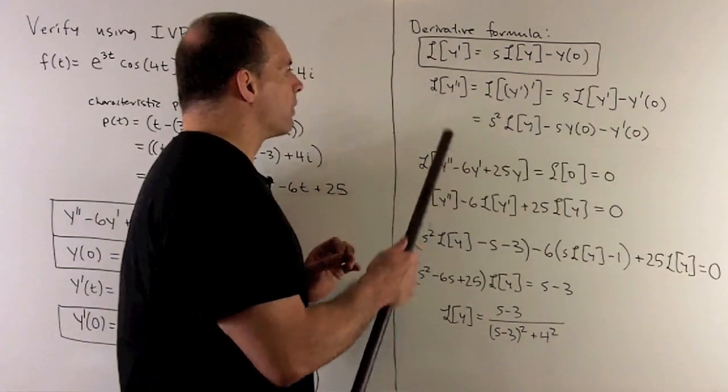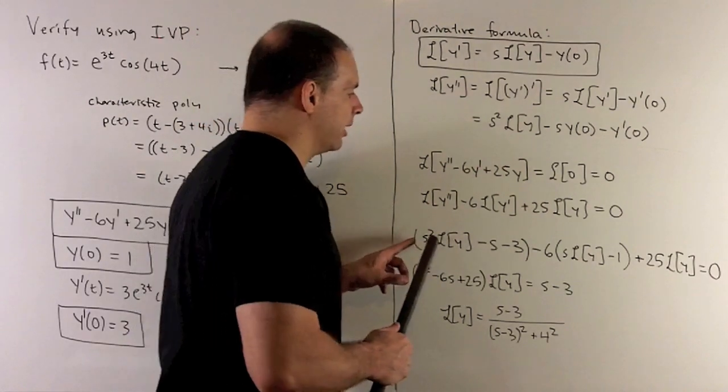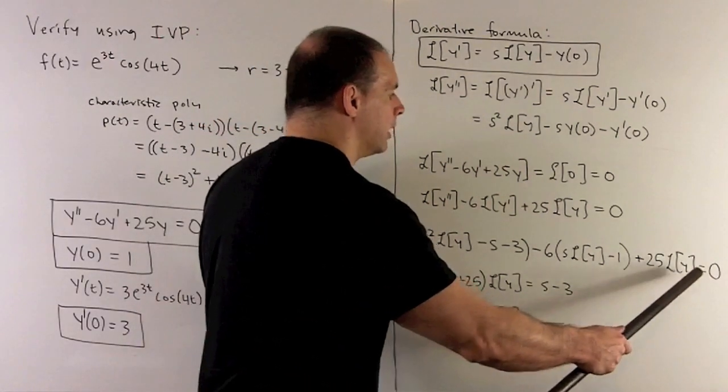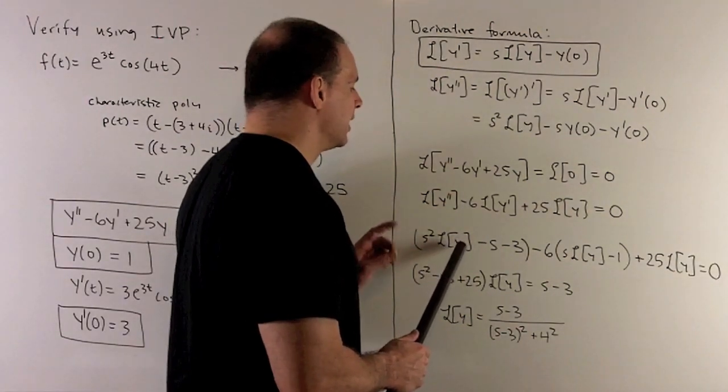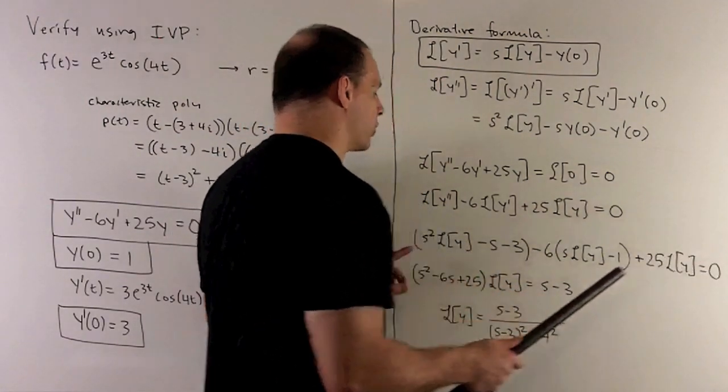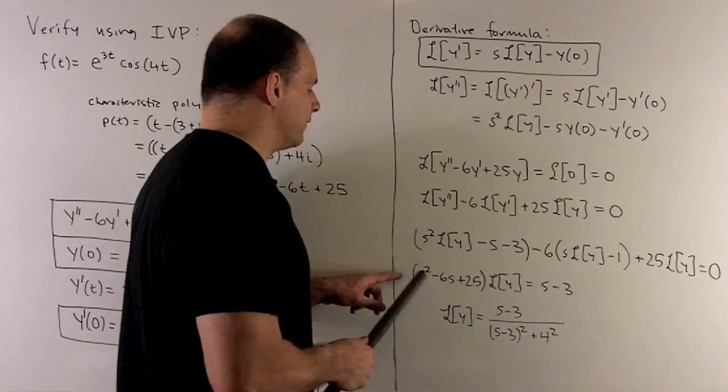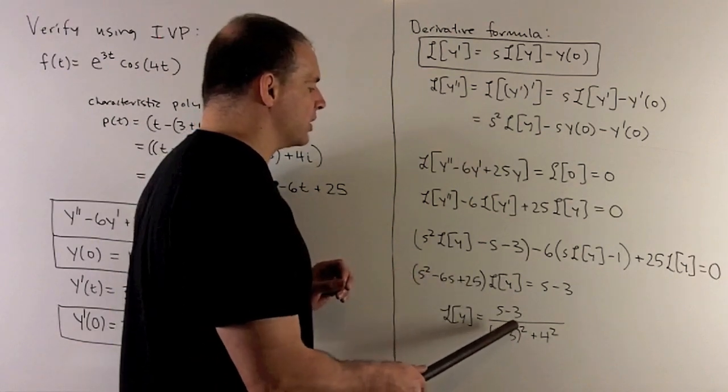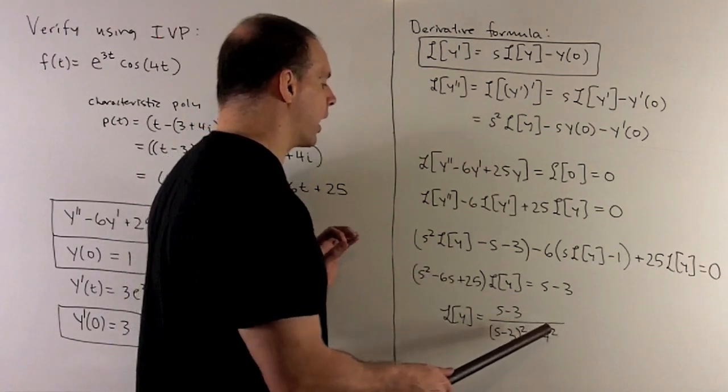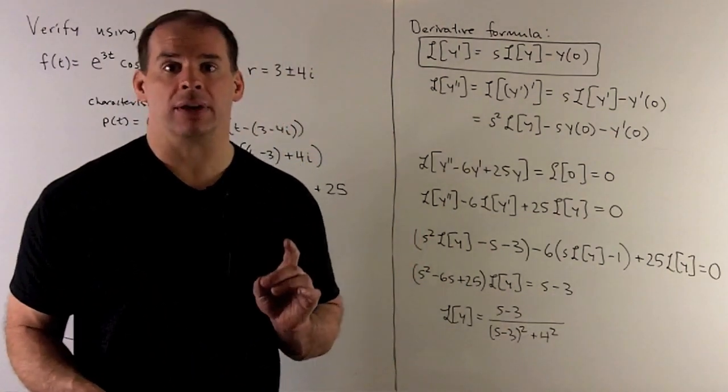If I substitute in our formulas, we get this big mess. If I collect all the terms with just the Laplace transform of y, take all the other stuff and push it to the other side, we get to here. We can divide by this, but also note we can rewrite this as (s-3)² plus 16. This verifies what we got using our other method.